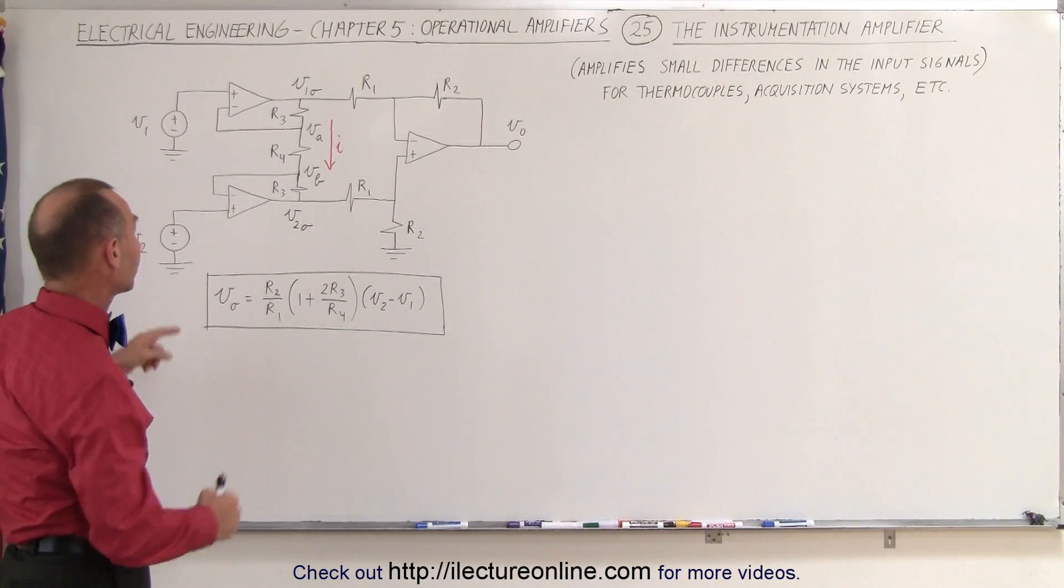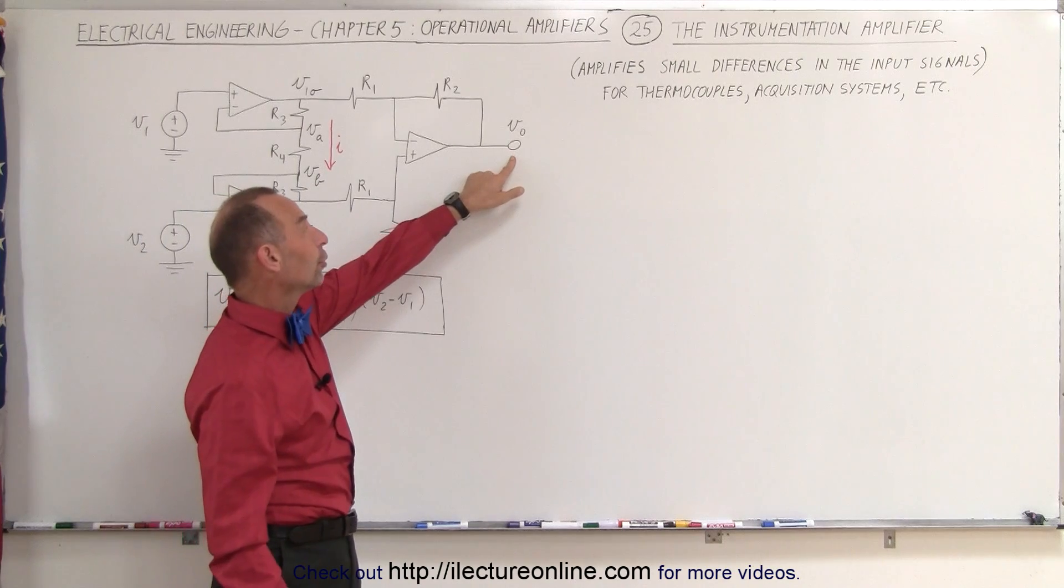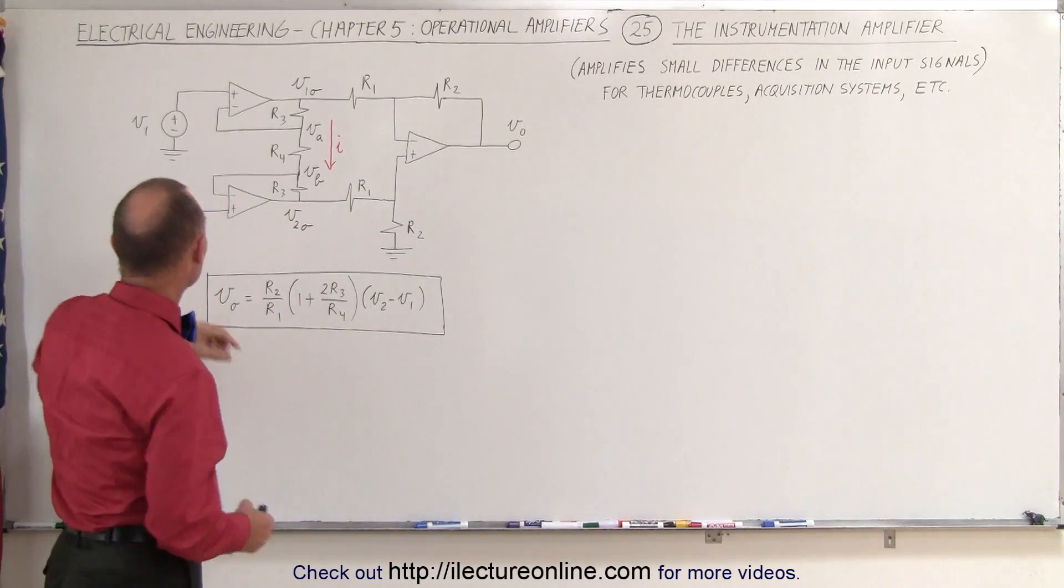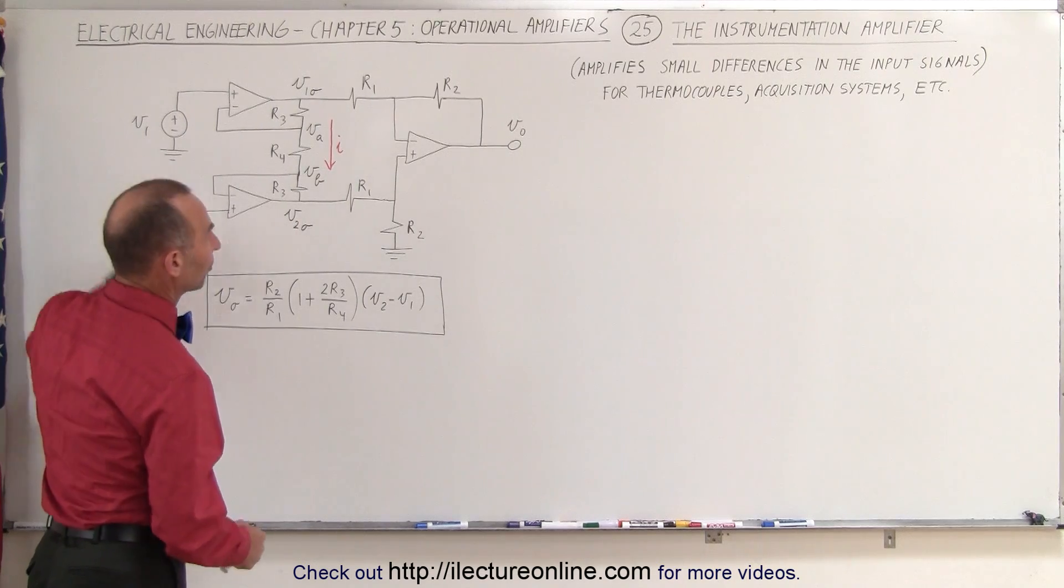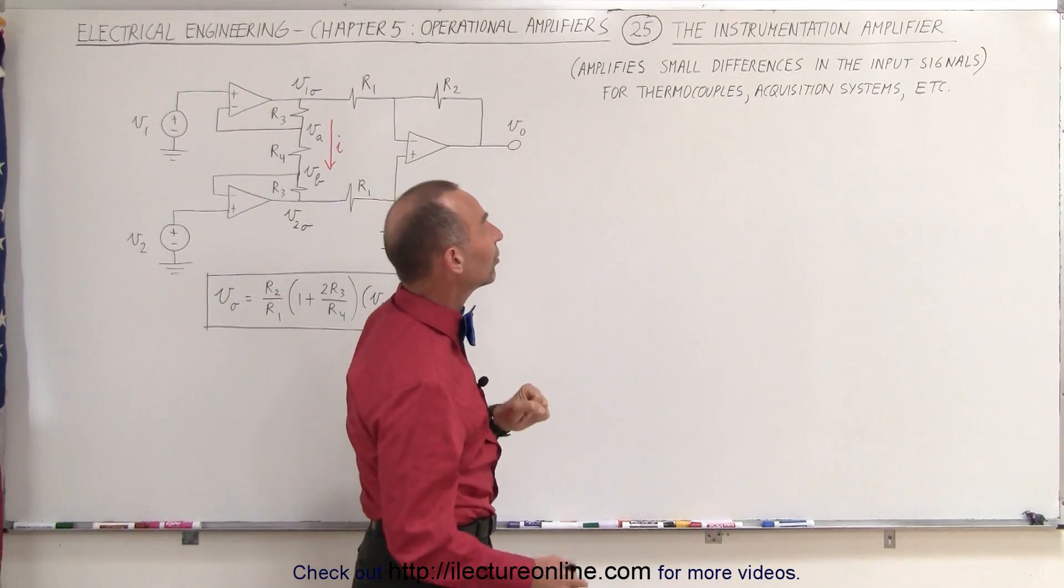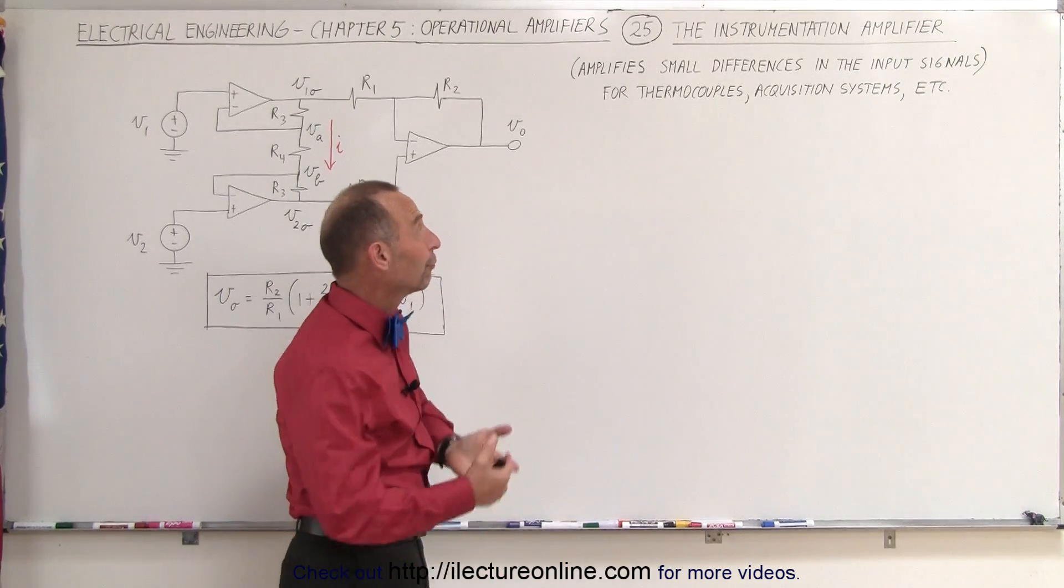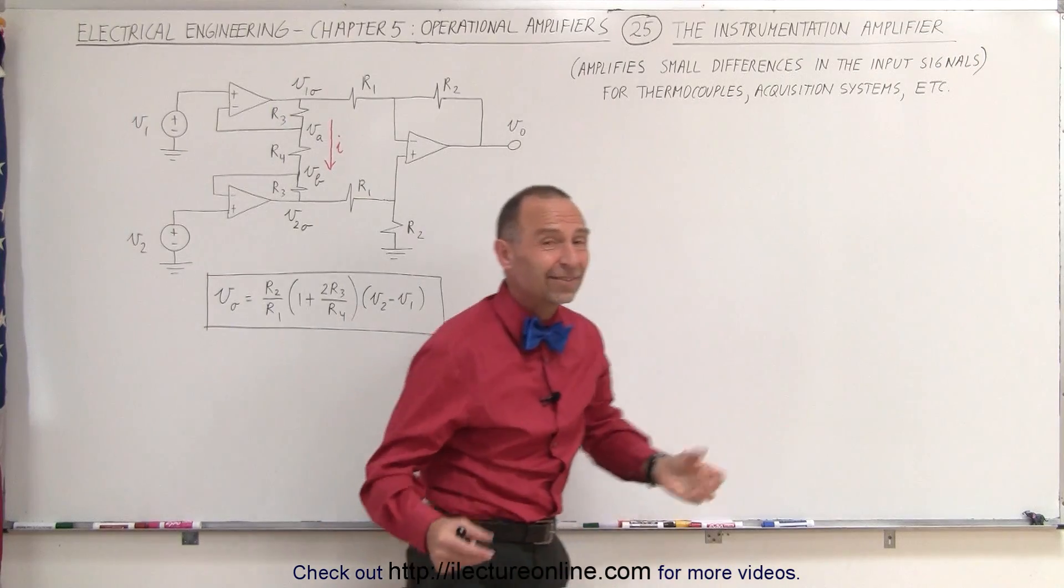It is an amplification circuit that uses operational amplifiers in such a way that the output voltage is an amplification of a very small difference between two inputs. In other words, it amplifies small differences in the input signals. And what is it used for? For measuring such things as thermocouples or acquisition systems.